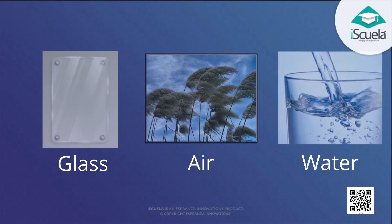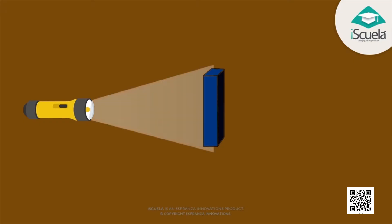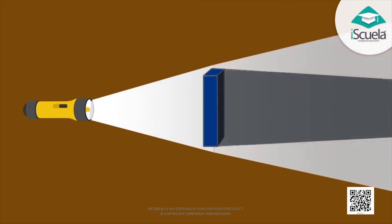There are objects through which light cannot pass and such objects are called opaque objects. That is why we are not able to see through opaque objects. When light falls on an opaque object, the shadow of the object falls on the other side.